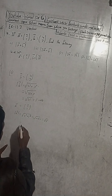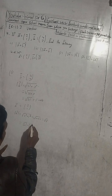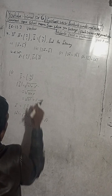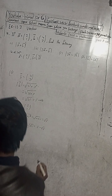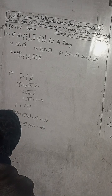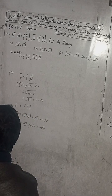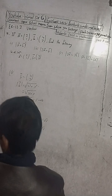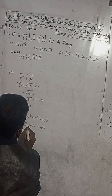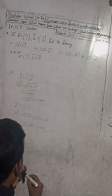Therefore b vector modulus plus a vector modulus equals 5 + root 5. Note: the question asks for |b| + |a|, not minus — that was a mistake. The answer with plus gives 5 + root 5, which matches the answer in the book.